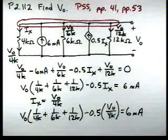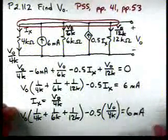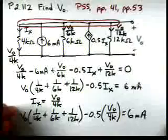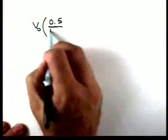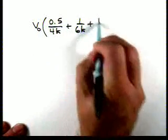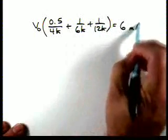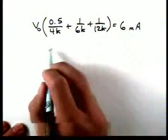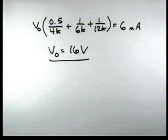Now, we need to just work on the algebra. V0 times 1 over 4K plus 1 over 12K is equal to 6 milliamps. And if we go through and solve, V0 is equal to 16 volts.